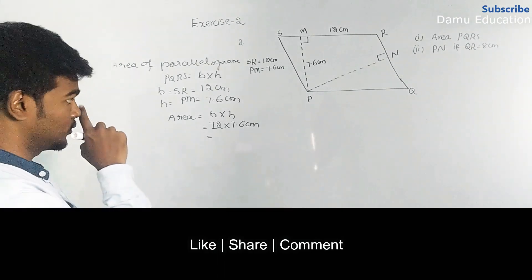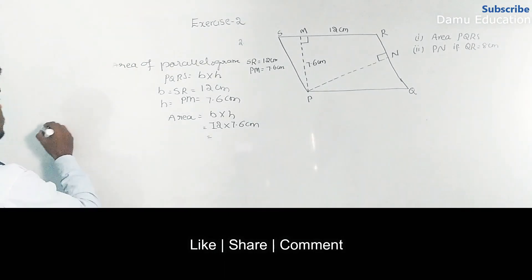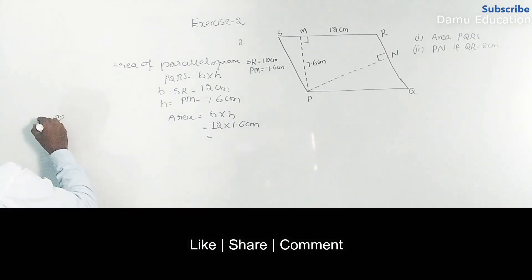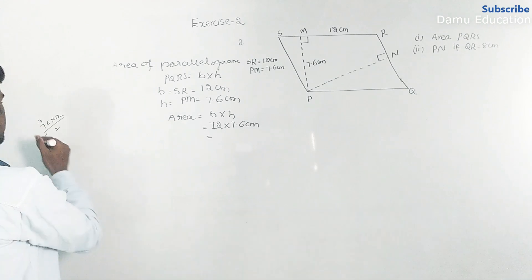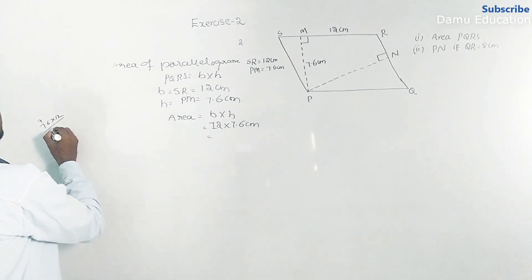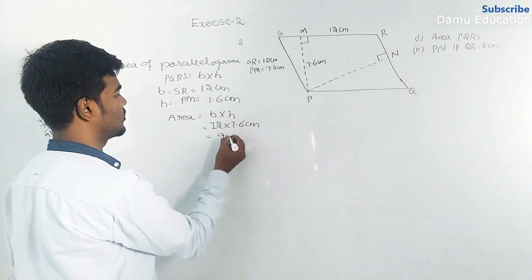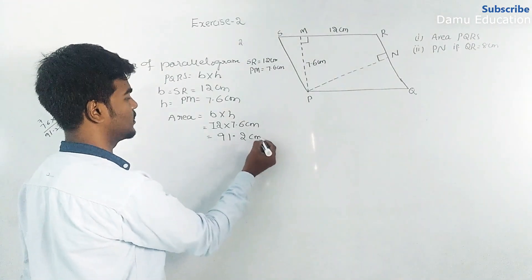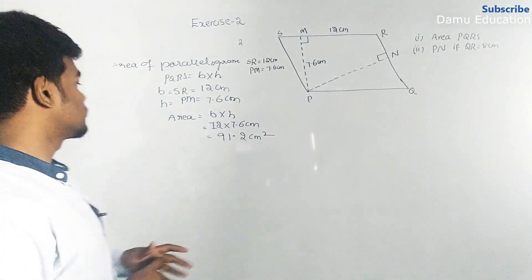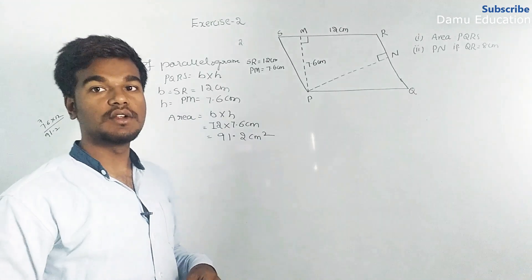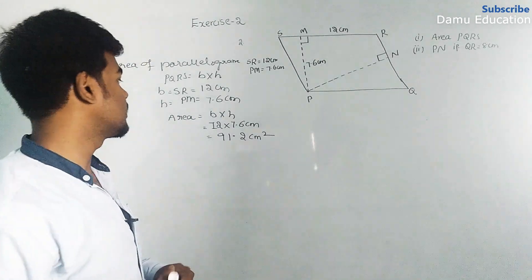Calculating 7.6 into 12 gives 91.2 centimeters square. So the area of parallelogram PQRS is 91.2 centimeters square.